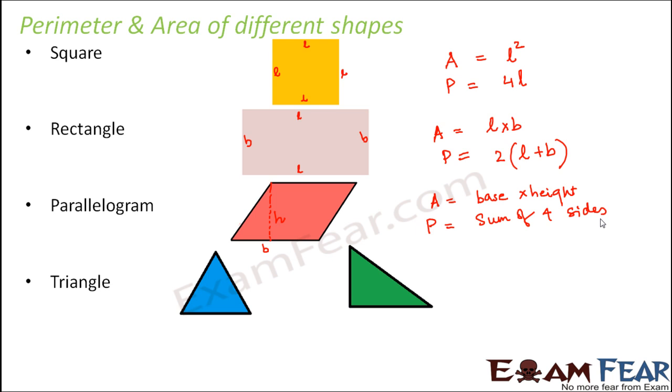A triangle. In case of triangle, you have many different types of triangle. You can have a scalene triangle, equilateral triangle, isosceles triangle, right-angled triangle. So there are many different types of triangle.